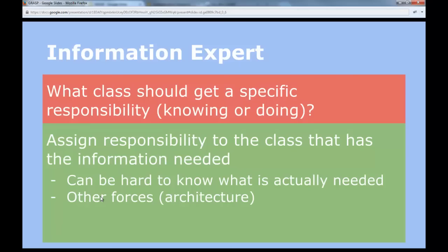You sometimes see in code that you access an object, ask for all the objects it contains, do something on those objects in a loop, and then you're done. This is typically a sign that you have missed the Information Expert — the responsibility should go into the class that has all those objects to start with. This is also called the Law of Demeter, or 'don't talk to strangers.' If you break the Information Expert pattern, you get this kind of chaining of calls all the time.